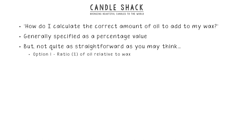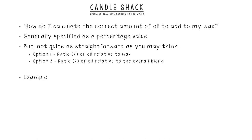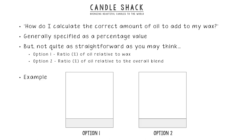Option one is the ratio of the oil relative to the wax, whereas option two is the ratio of oil relative to the overall blend. To make this a bit simpler, let's look at an example where we've got two glasses exactly the same size.